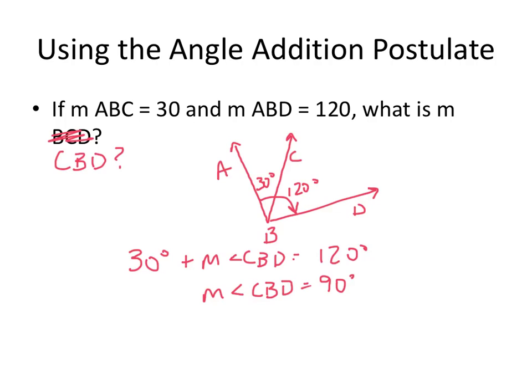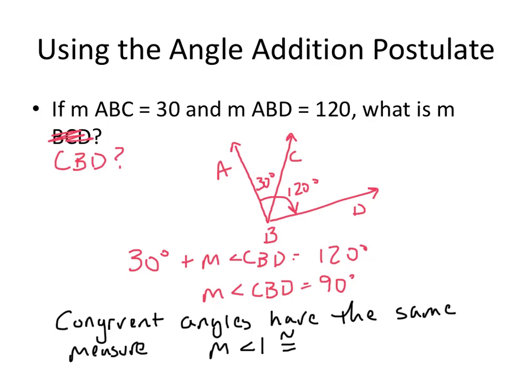Oh one other thing we need to know is congruent angles. Congruent angles have the same measure. So we might say the measure of angle one is congruent to the measure of angle two. We could also say angle one is congruent to angle two. Both of these things mean the same thing. So you might see it written either way and either way is fine.